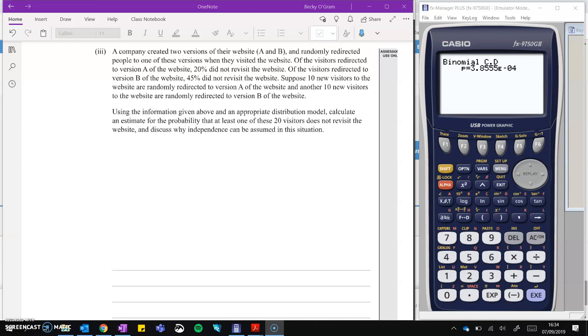This one takes a little bit to wrap your head around. I'm going to go to this bit at the end of what are we aiming for. So we want the probability that at least one of these 20 visitors, no matter which one they went to, does not revisit the website. So that's the probability. If we're saying X is the number of people that don't revisit, that we get at least one person that doesn't revisit.